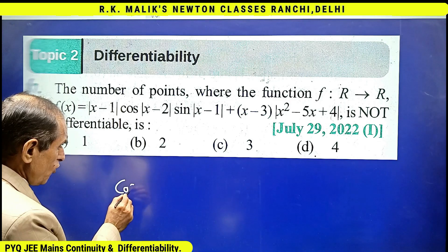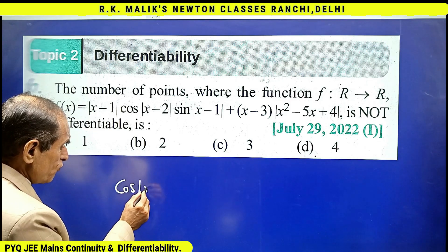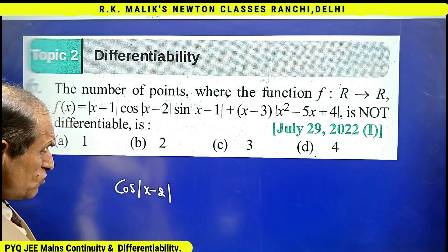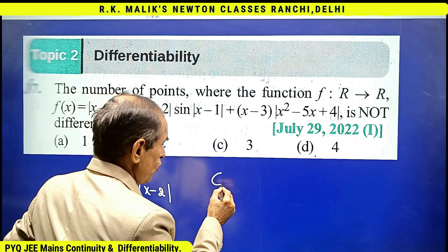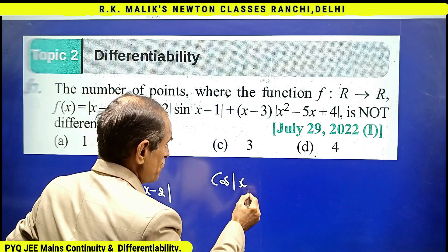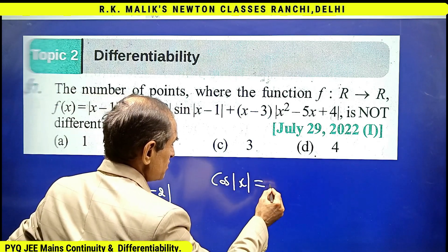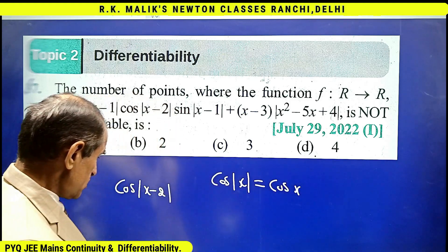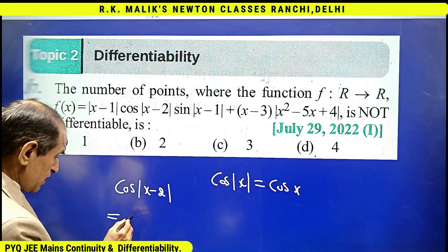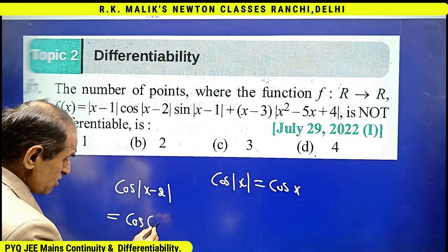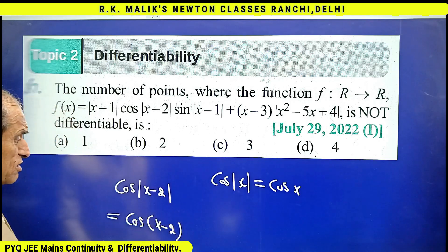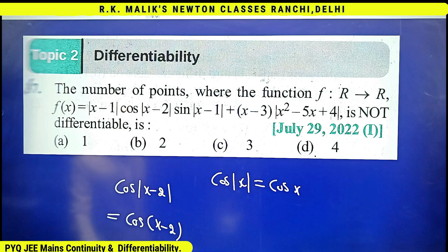The next point concerns cos|x - 2|. We know that cos|x| is the same as cos(x), so cos|x - 2| is the same as cos(x - 2). The modulus here is written just to confuse the student.